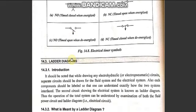We will now look at ladder diagrams. So far we have discussed electro-hydraulic and electro-pneumatic circuits and their basic components: push buttons, limit switches, pressure switches, temperature switches, solenoids, relays, and timers. A ladder diagram is a representation of the electrical devices used in a circuit — it is a self-explanatory diagram showing what electrical control devices are used.